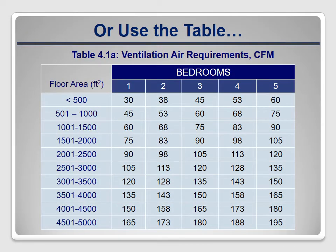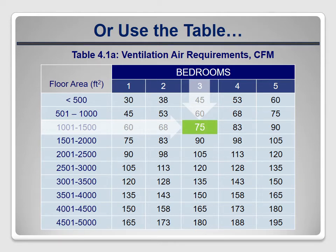ASHRAE 62.2 2013 also includes a table you can use instead of doing the calculations. You just find the row that includes the size of the house and the column with the number of bedrooms. Where the two intersect, it lists the required CFM, which is 75. Notice that in this case the number is higher than what we calculated — that's because it calculates based on the highest possible floor area in that row. In our case the house is 1200 square feet, but the table calculated for 1500 square feet. The standard has us over-ventilating again.